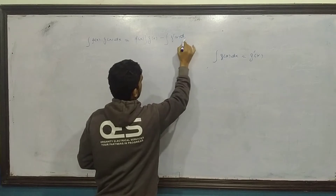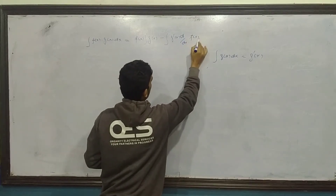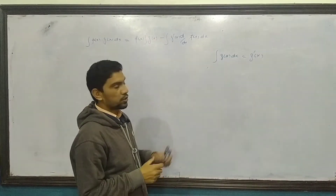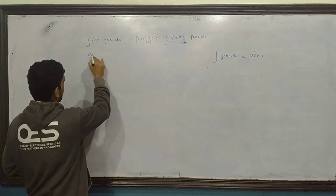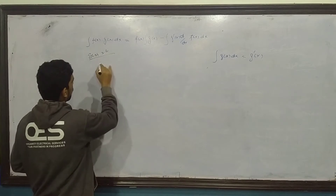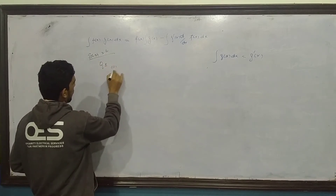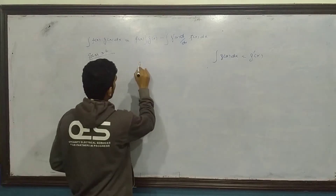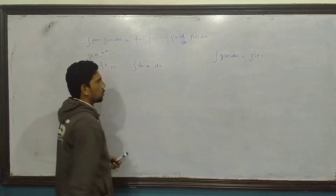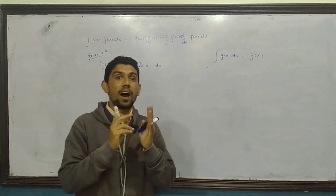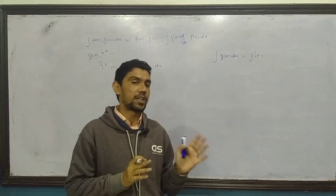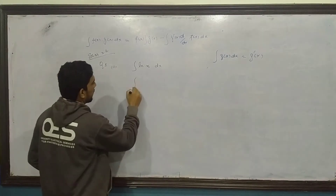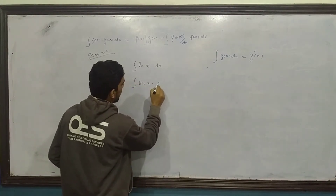Ab exercise 3.4 ka question number one ka second part dekhte hain: log of x. Log function aa gaya hai, koi trigonometric inverse function nahi hai. Log of x ko first function lenge. Doosra koi function nahi diya gaya, toh second function 'one' (1) hoga.